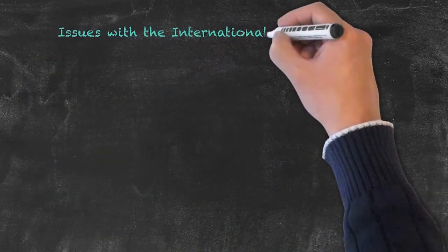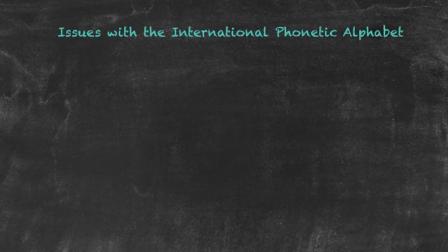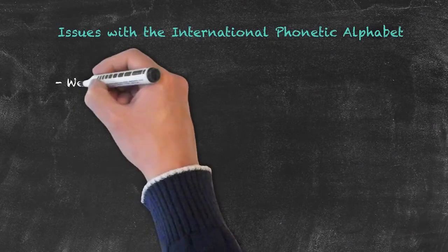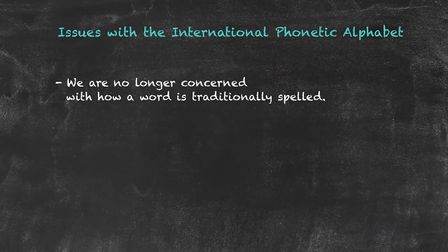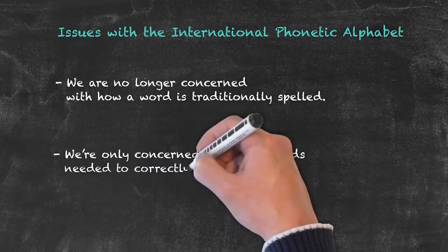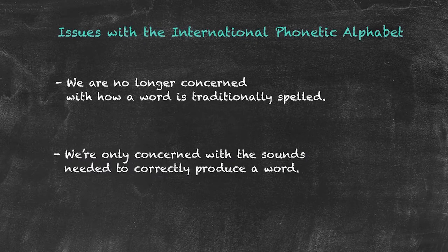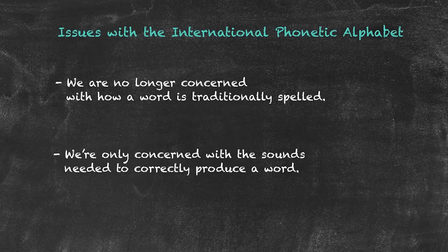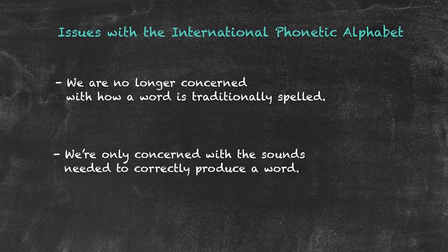There are two issues that need to be stressed when working with the International Phonemic Alphabet. First, we are no longer concerned with how a word is traditionally spelt. Additionally, we need to stress that we are only concerned with the sounds needed to correctly produce a word. So, rather than numerous spellings which can often be pronounced in different ways, we have one symbol representing one sound. Once we can isolate a sound, rather than juggling various spellings, we can work with our students on how to say that sound. Doing that successfully is related to manner and place of articulation, which will be covered shortly.